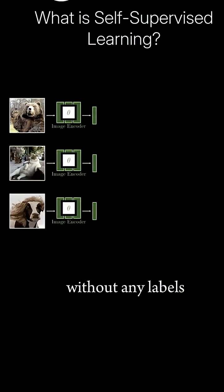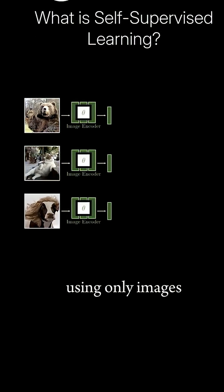Can we train our image encoder without any labels, using only images? If we can achieve this, we can leverage the enormous amount of unlabeled images already available to train our models at scale. This is the goal of self-supervised learning.